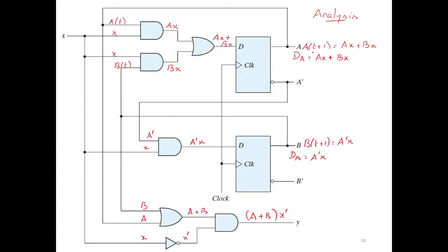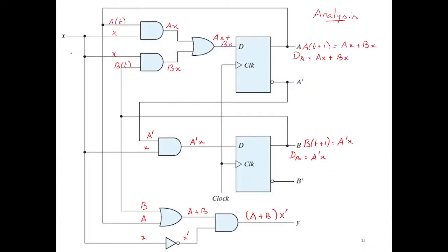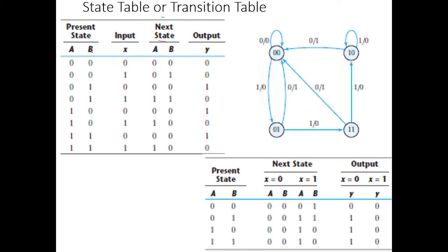Using the output equations for flip-flops A and B and y, we can compute the state table or transition table. The present state and input together decide the next state. We have two flip-flops a and b with input x, so we enumerate all binary combinations for 3 bits from 000 to 111 as present state and input, then compute the next state values.